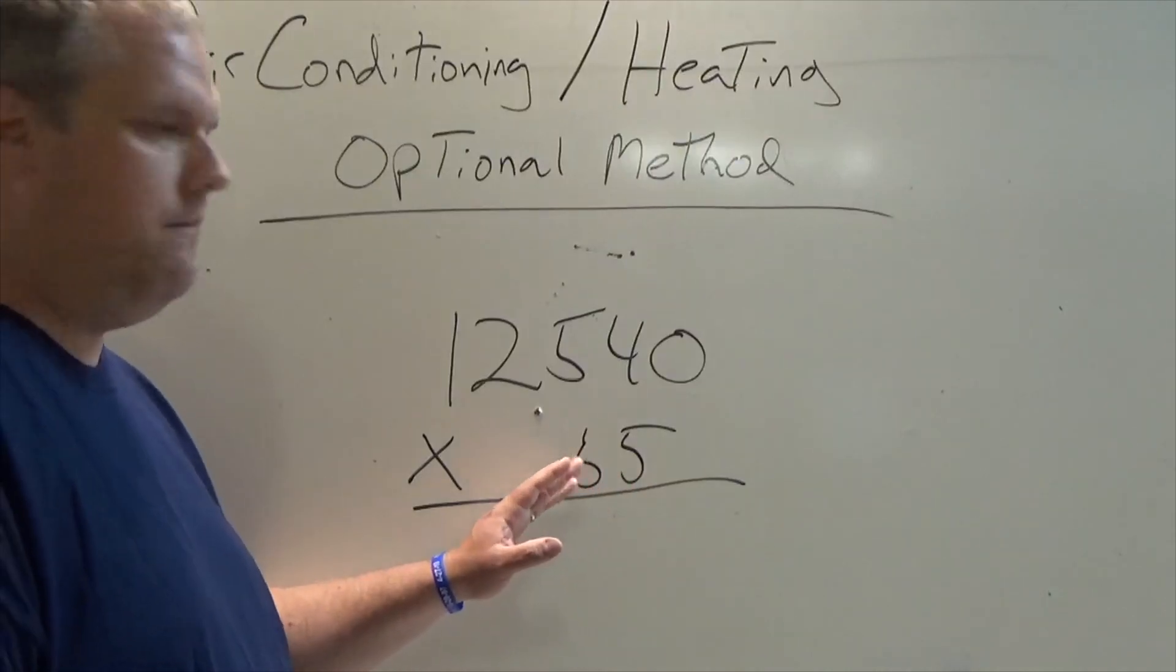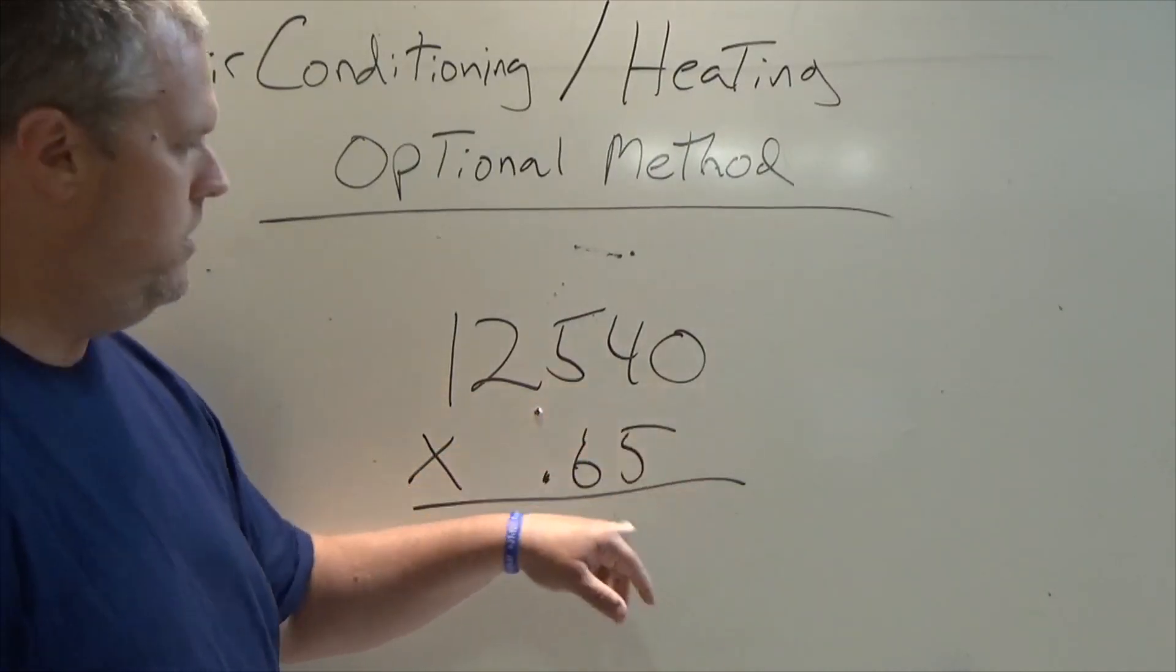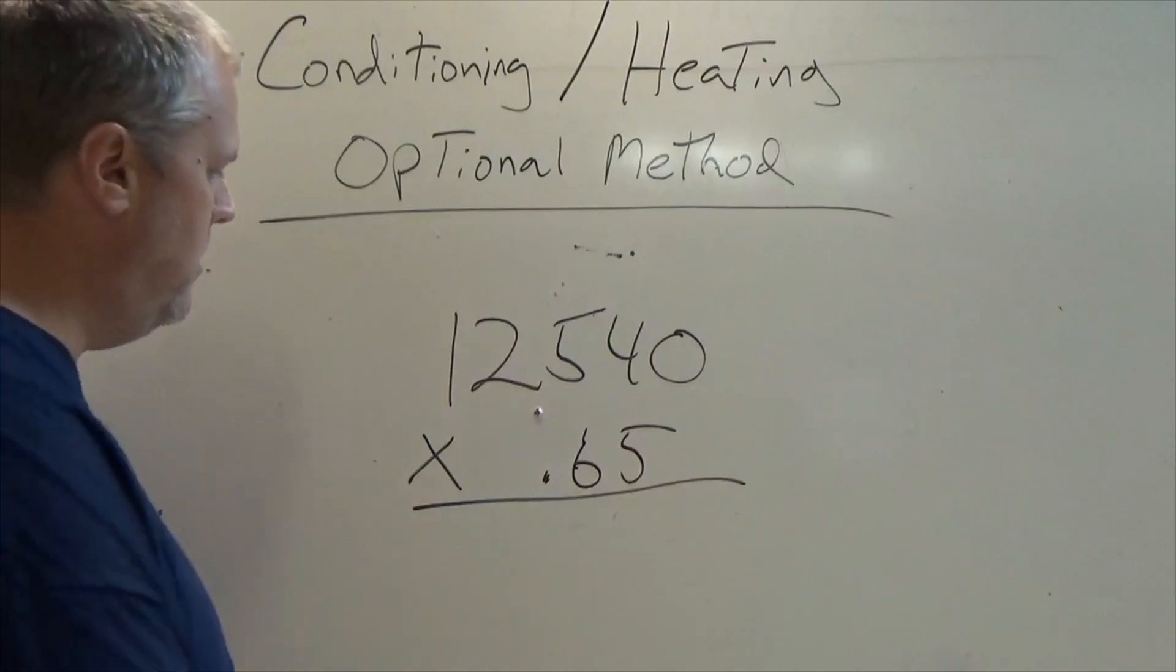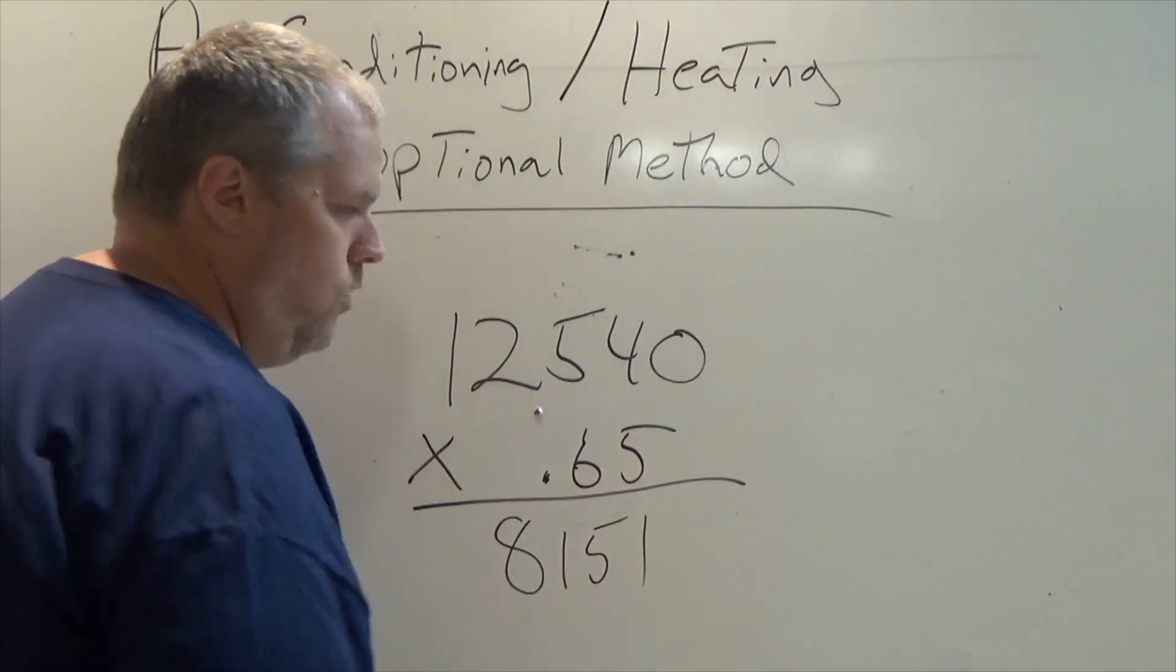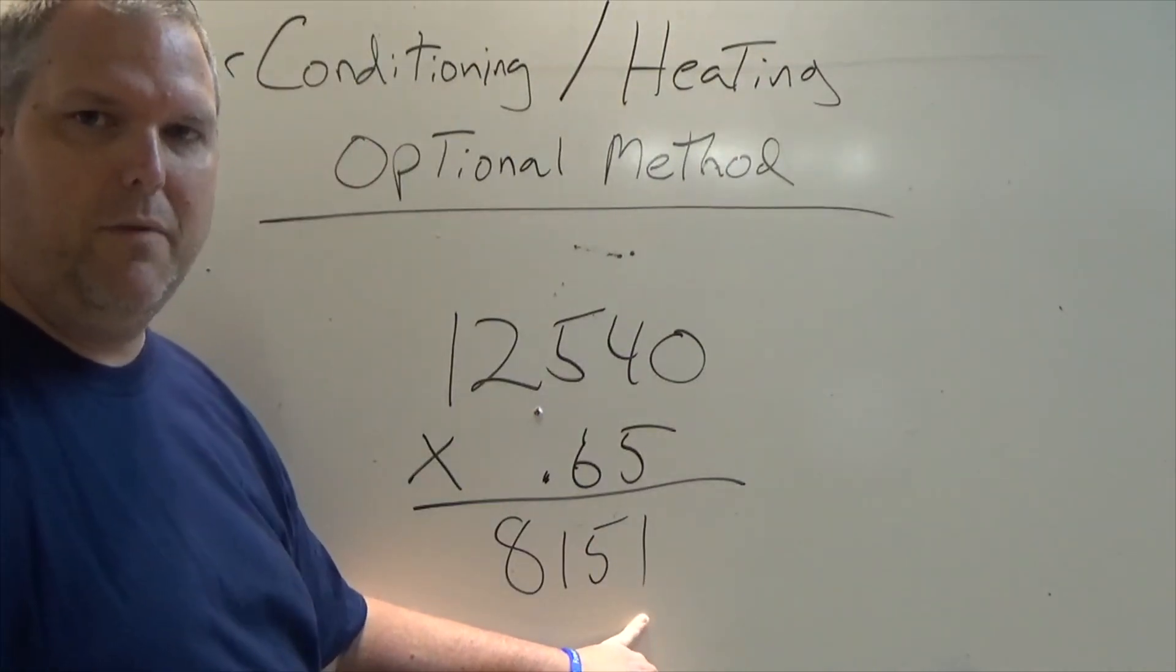Because there's three units, I'm going to multiply that by 65%. So now that I have this set up, I'm going to take the 12,540, multiply it by 65%, and it's going to give me 8151. This is my VA for my heating.